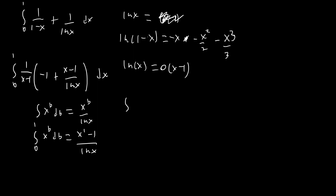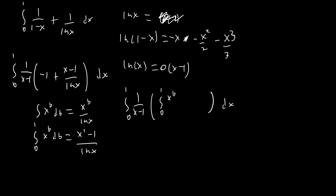We're going to end up with the integral from 0 to 1 of 1/(x-1) times the integral from 0 to 1 of x^b db, then subtracting 1. In order to exchange our order of integration, we need everything on the inside expressed in terms of the integral, so we write the negative 1 as the integral from 0 to 1 of negative 1 db, and combine it inside.